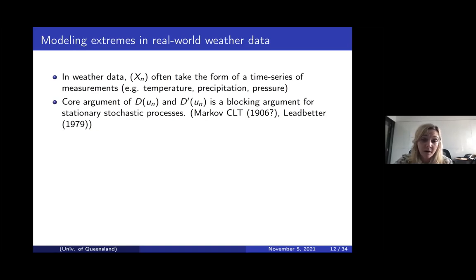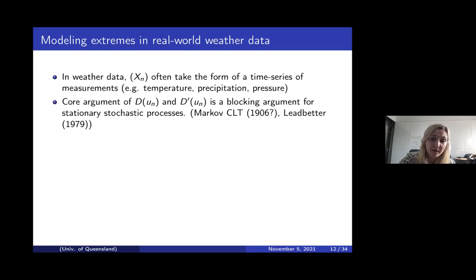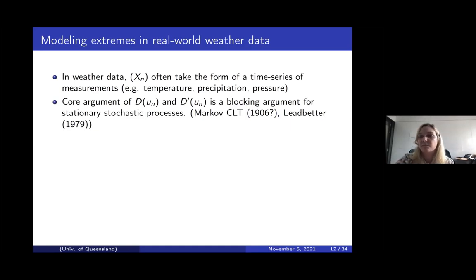It's natural to ask how D and D' translate to a system of time series. This comes back to the core argument of D and D', which is a blocking argument for stationary stochastic processes, based on the blocking argument by Markov for the central limit theorem — originally written around 1906 in Russian. Ledbetter uses and adapts this for maxima of stationary stochastic processes. The blocking argument says D allows for decorrelation between blocks, and D' allows for decorrelation within blocks.